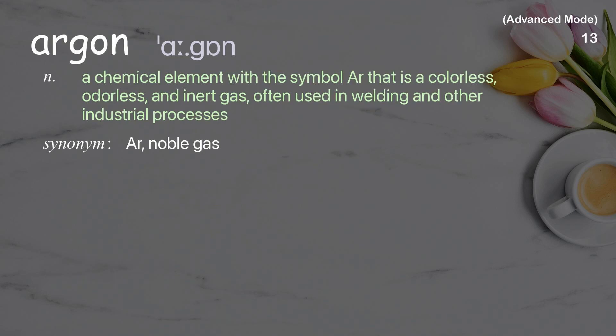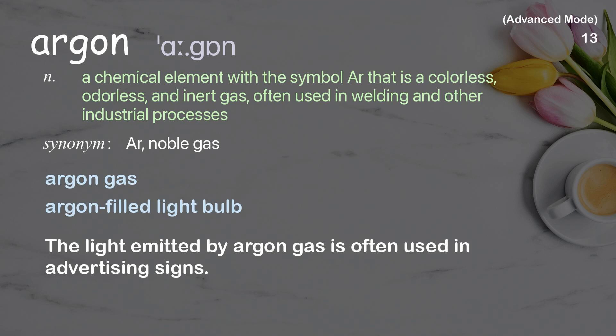Argon: A chemical element with the symbol AR, that is a colorless, odorless, and inert gas, often used in welding and other industrial processes. Examples: Argon gas; argon-filled light bulb. The light emitted by argon gas is often used in advertising signs.